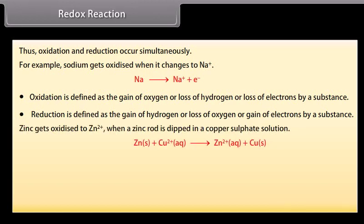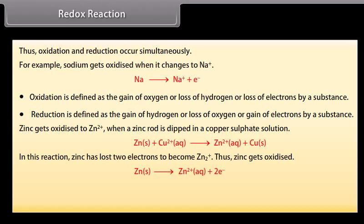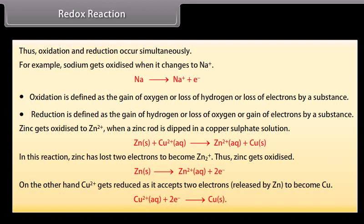Zinc gets oxidized to Zn2+ when a zinc rod is dipped in a copper sulfate solution. In this reaction, zinc has lost two electrons to become Zn2+, thus zinc gets oxidized. On the other hand, Cu2+ gets reduced as it accepts two electrons released by Zn to become Cu.